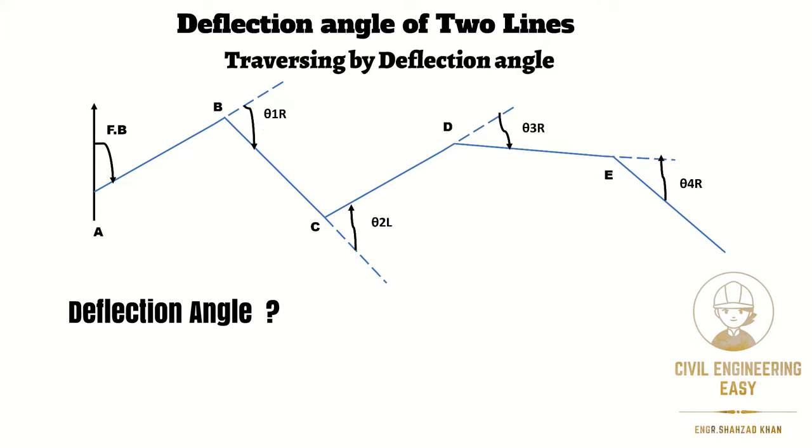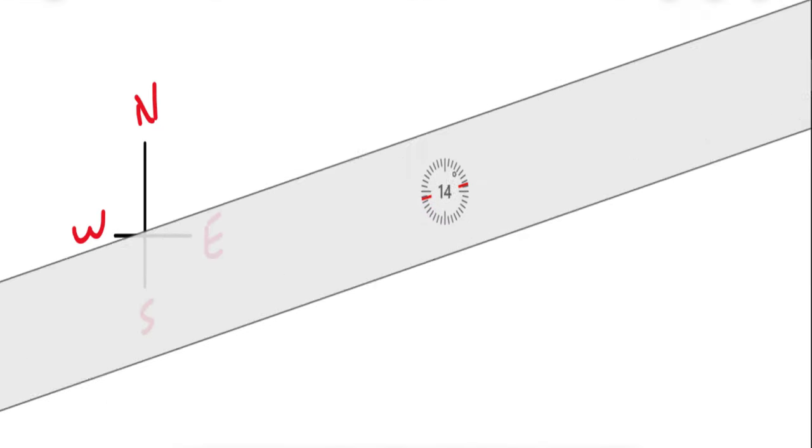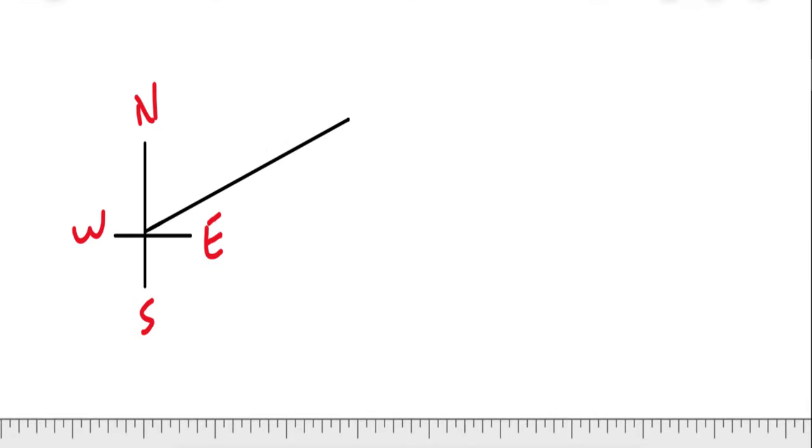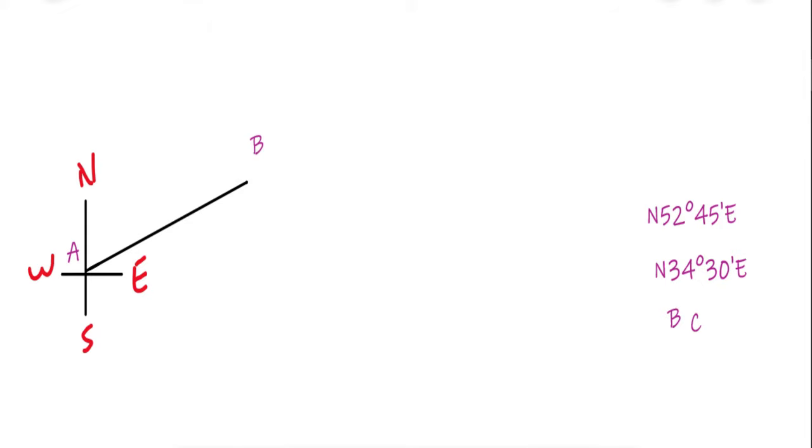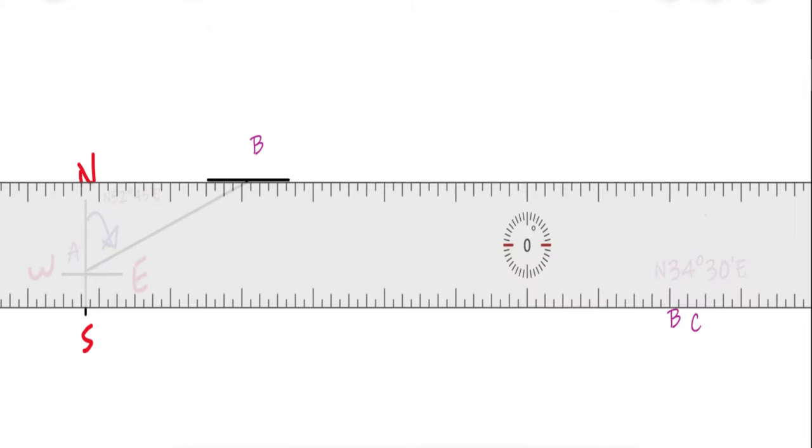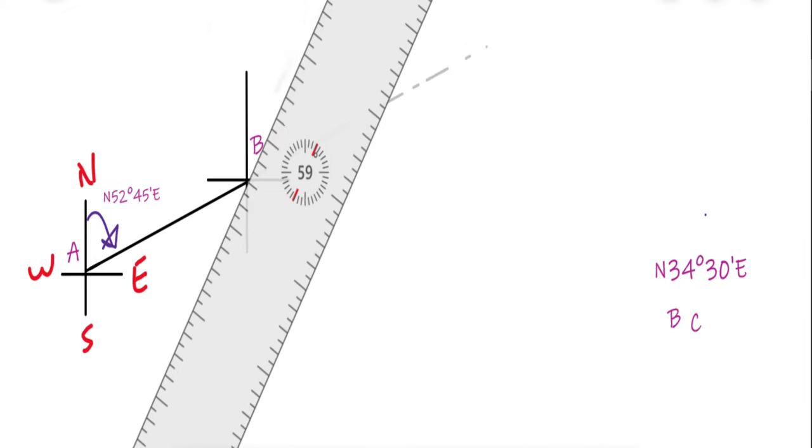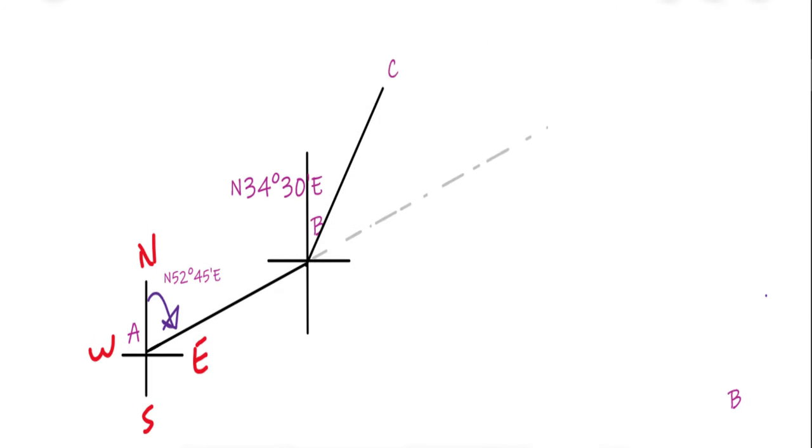For better understanding, let's solve one short numerical example. The bearing of two traverse legs AB and BC are north 52 degree 45 minute east and north 34 degree 30 minute east respectively. Then calculate the deflection angle between the two lines.